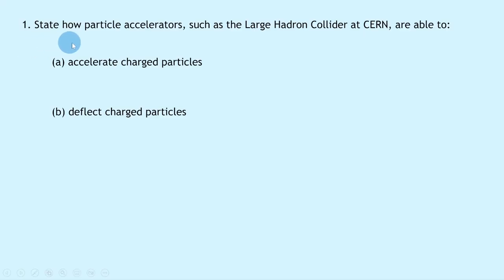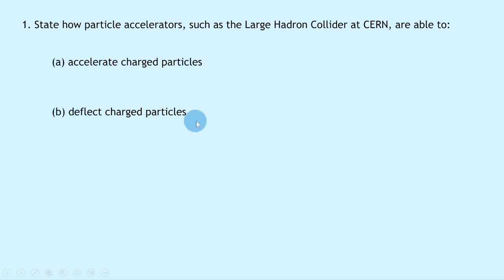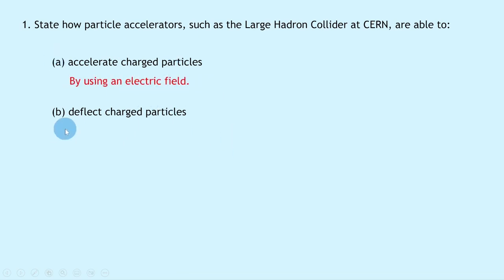Question one says to state how particle accelerators such as the Large Hadron Collider at CERN are able to: (a) accelerate charged particles and (b) deflect charged particles. For (a), we're able to accelerate charged particles by using an electric field, and for (b) we're able to deflect charged particles or change their direction by using a magnetic field.